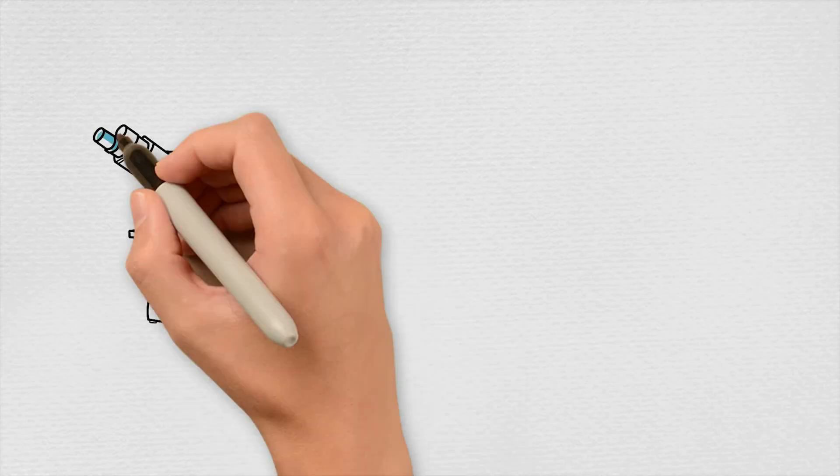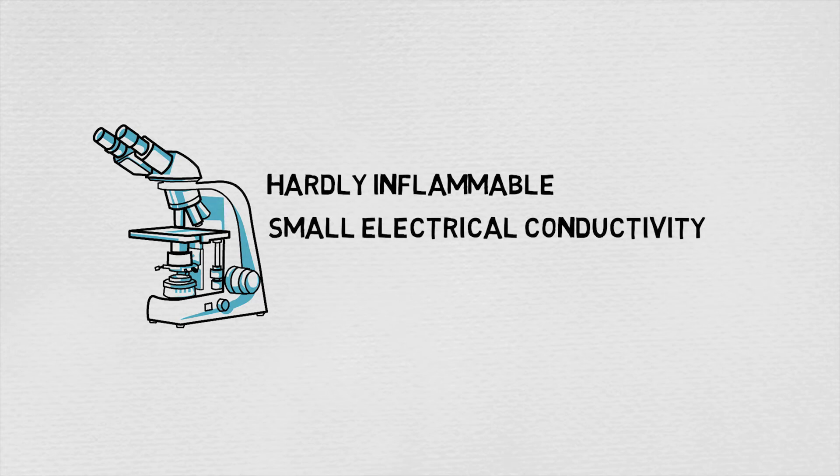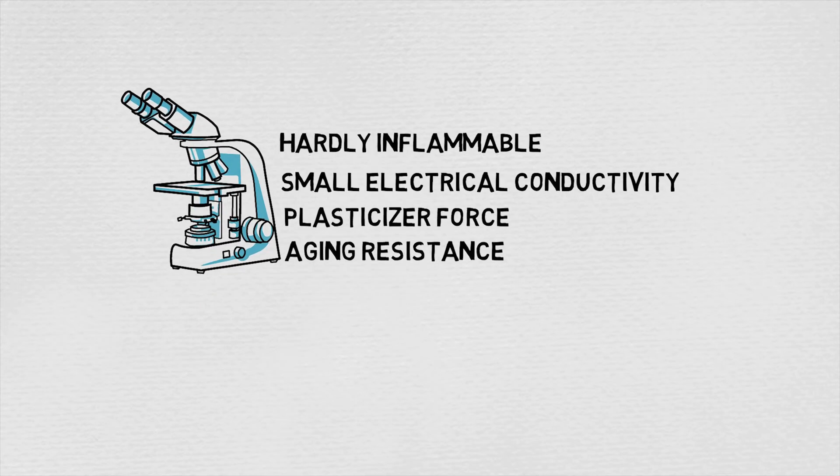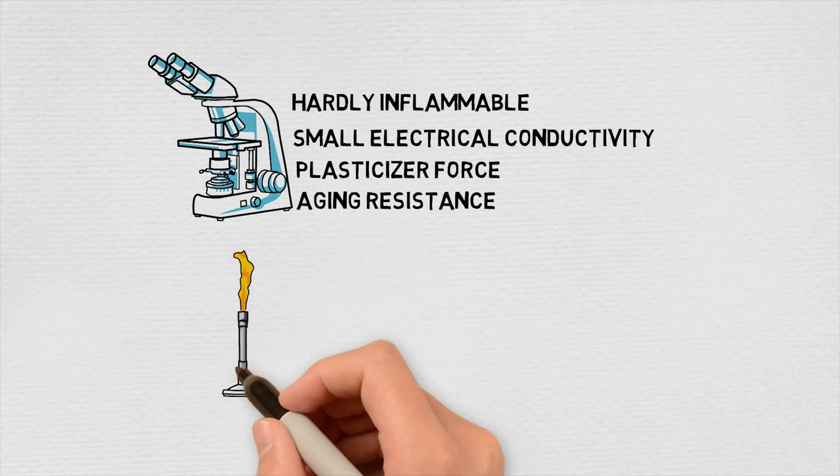Some of the chemical properties of PCBs are they are hardly inflammable, have a very small electrical conductivity, which makes them an excellent insulator, a strong plasticizer force, for example in sealing compounds, as well as a strong aging resistance because of their chemical resistance to light, acids and alkalis. If PCBs are exposed to extreme heat or fire, highly toxic furans and dioxins may be formed and released.